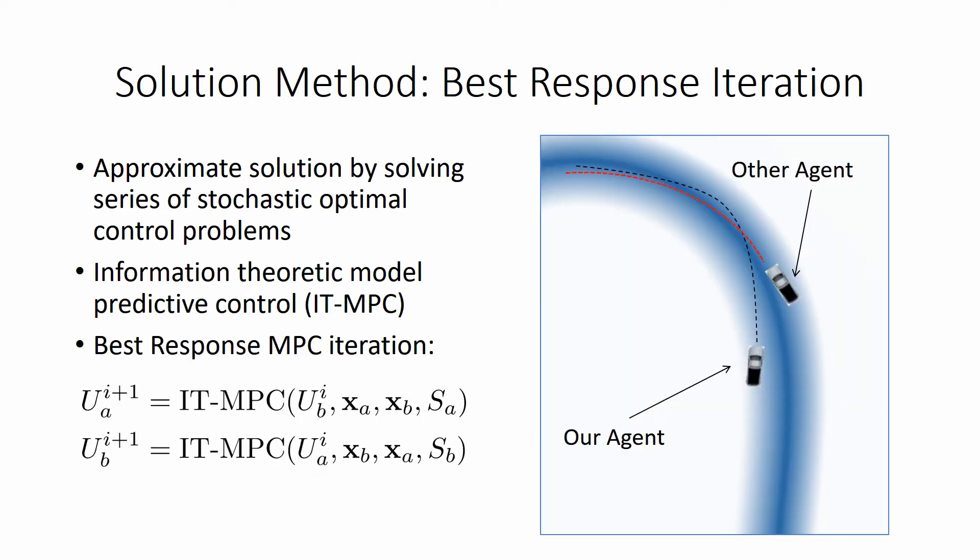The resulting best response MPC method computes the control update by holding the prediction for the other agent fixed, and then performs an MPC optimization iteration which takes into account both the vehicle's current and predicted states. It then updates the prediction for the other vehicle using the same method.